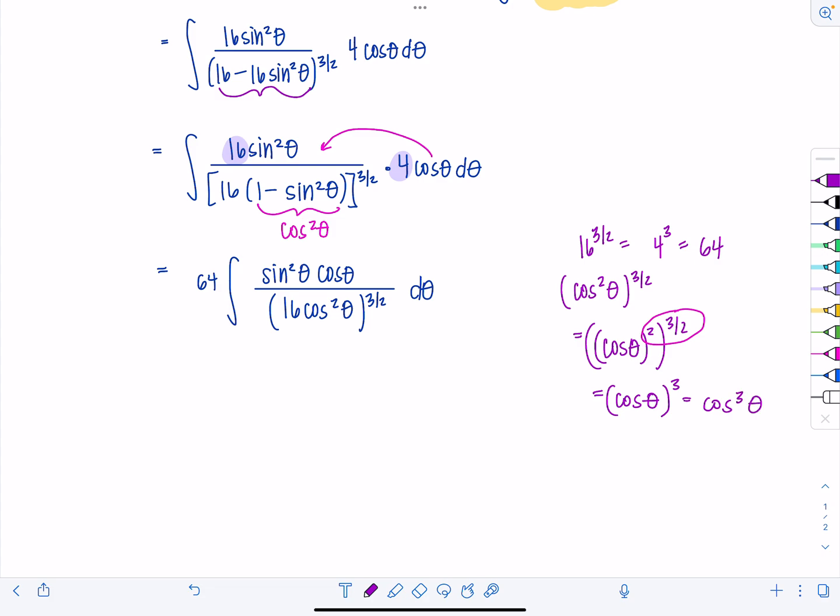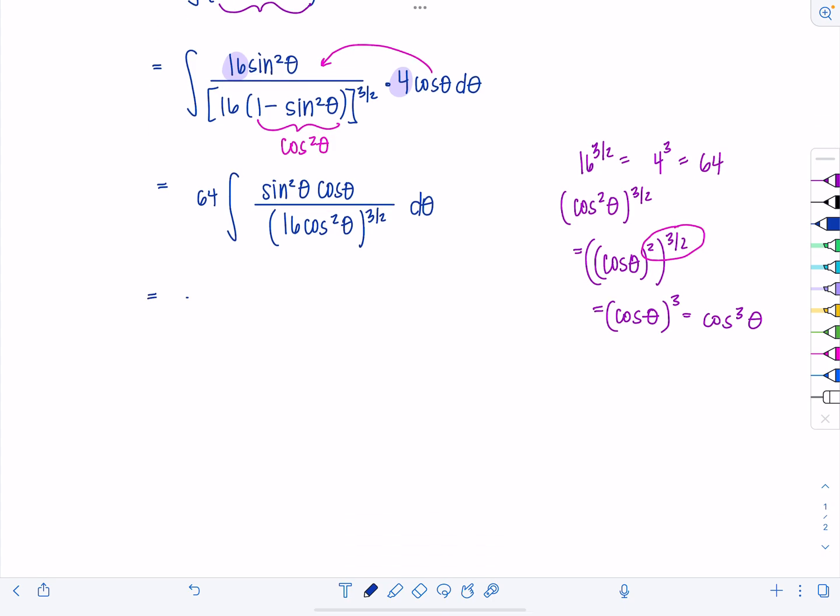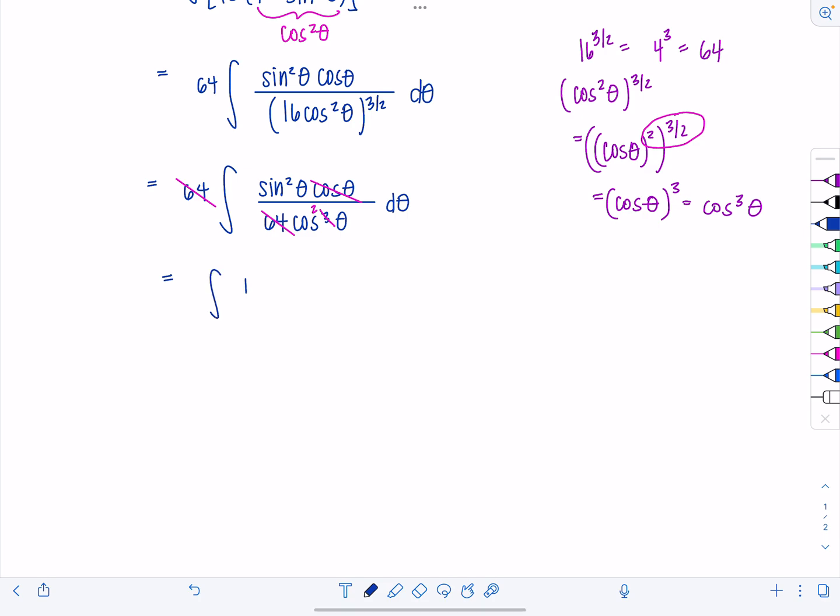And this gives you cosine of theta cubed, which we don't write that way. We write cosine cubed theta. So that means now we've got a lot of fun cancellation going on. 64 integral, sine squared theta, cosine theta, and then the denominator now is 64 cosine cubed theta, d theta. Look at all the cancellation that we can do. So now 64 is gone. And then one of the cosines cancels out. So this is cosine squared. So now I just have sine squared over cosine squared, which I'm going to rewrite as tangent squared theta.